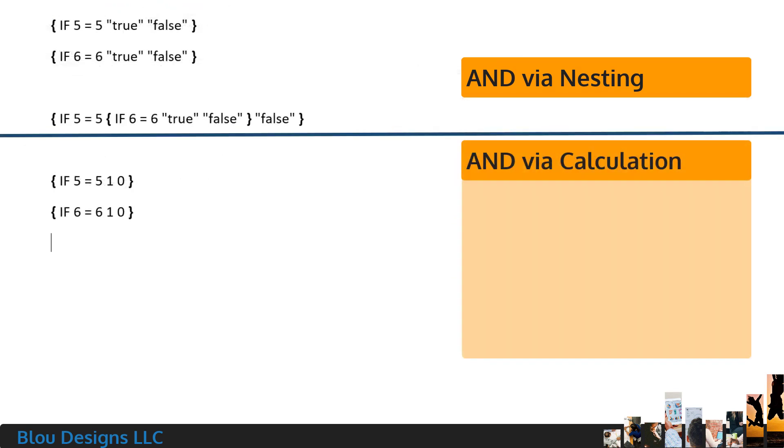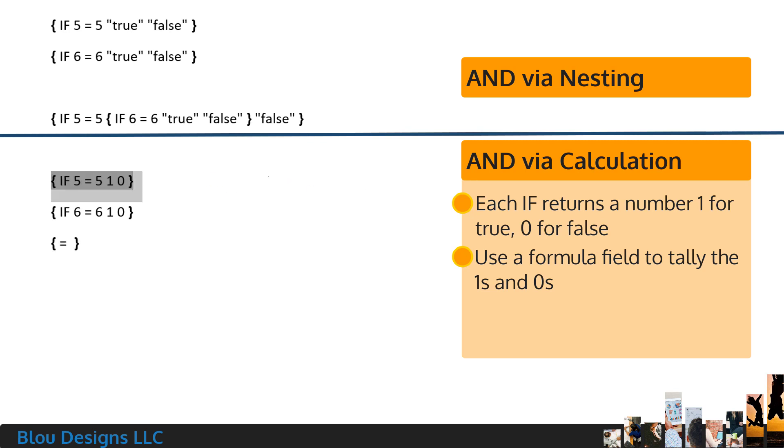The second way to check if multiple criteria are true at the same time is to use calculations. For this method, we'll start with checks that return zeros and ones in the computer science way. And we're going to put them inside of a formula field as our expression to evaluate, so that we can sort of tally how true our criteria are. Formulas also go inside of curly braces, where the first thing inside is an equal sign, followed by some math. In our case, our formula needs to add the text returned by the check for 5 equals 5 and the text returned by the check for 6 equals 6.